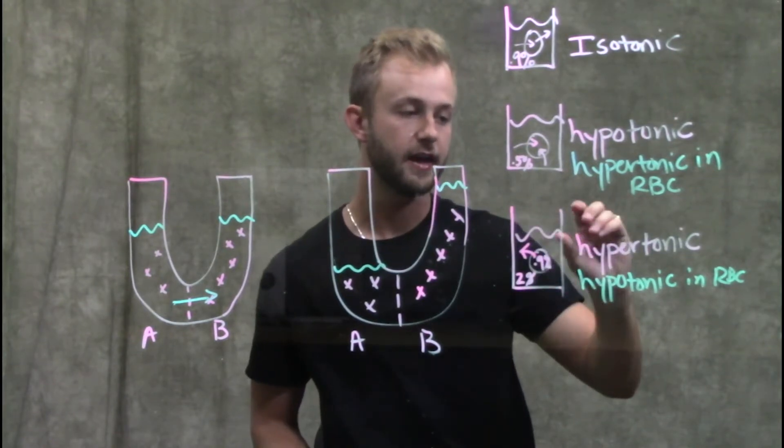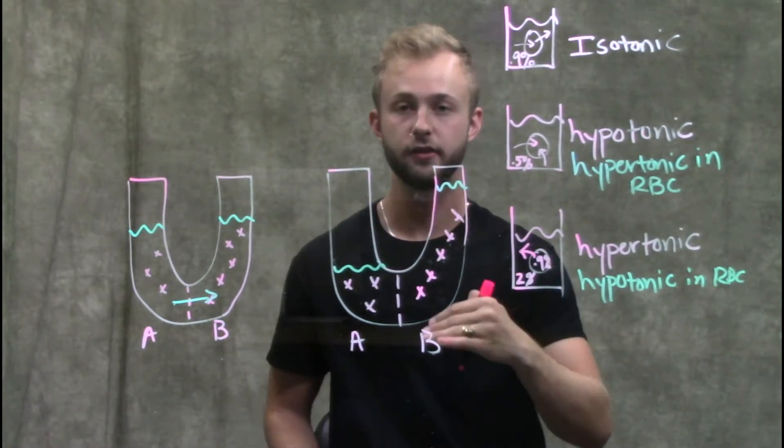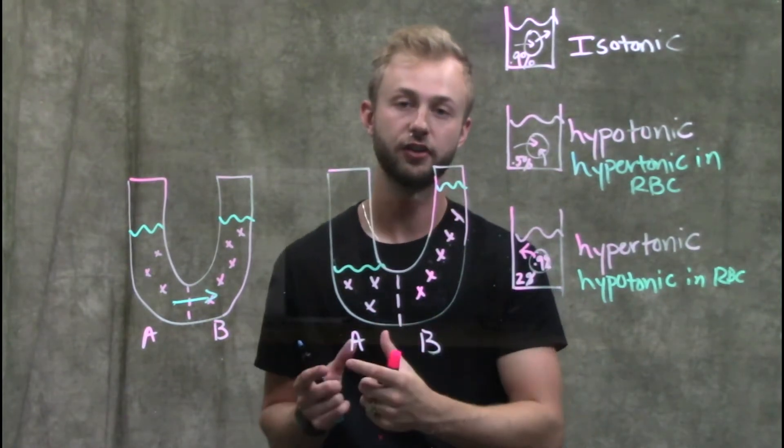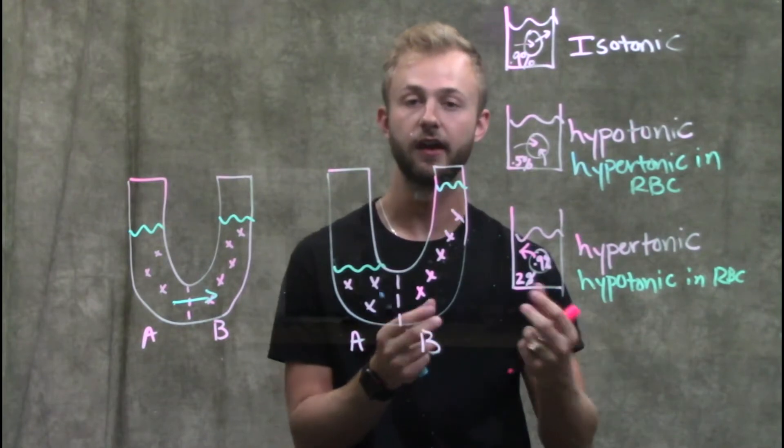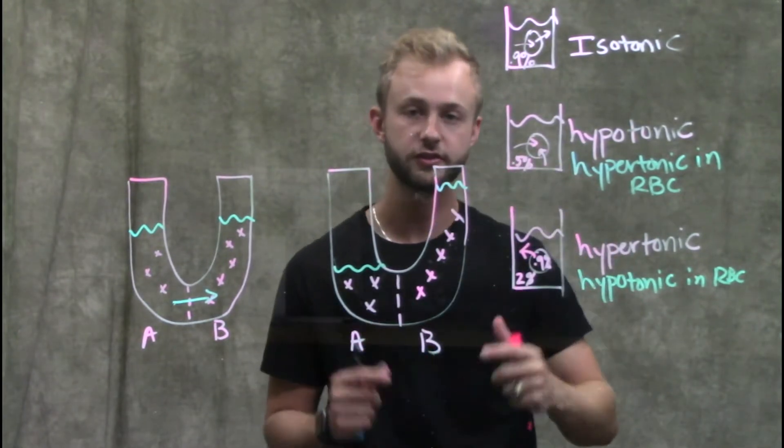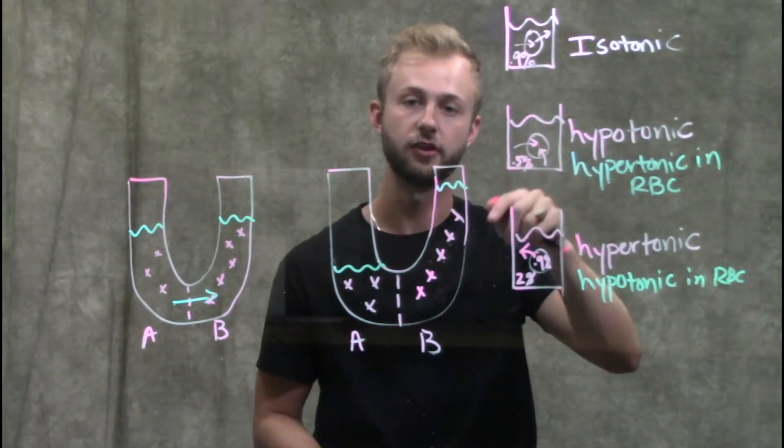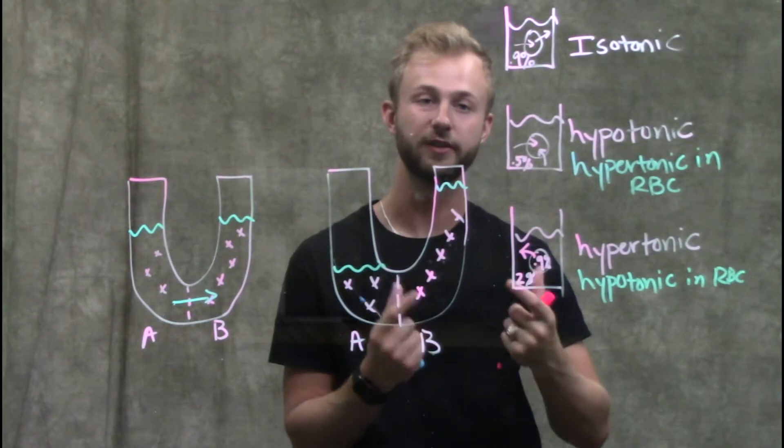If we have a blood cell placed in a hypertonic solution, water will leave the blood cell, go to the region of higher solute concentration, which is the solution in this case, and shrivel. If we place the cell in a hypotonic solution, water still moves towards a higher solute concentration, which is inside the cell in this scenario, so the cell will swell and eventually burst.